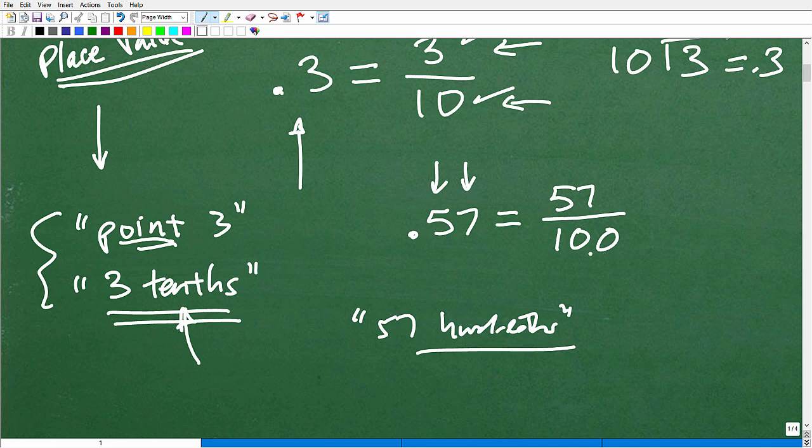So that's 57 over 100. This is the tenths place, this is the hundredths place. So 57 hundredths. So that is the secret to changing a decimal into a fraction. Let's try one more.